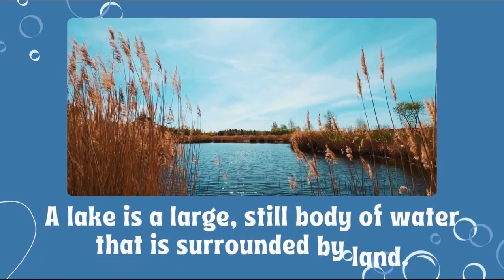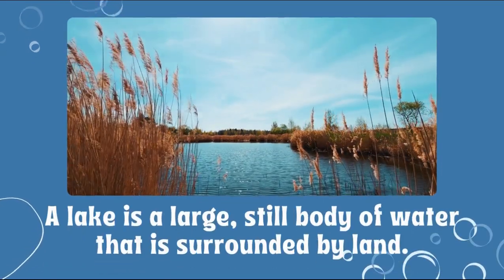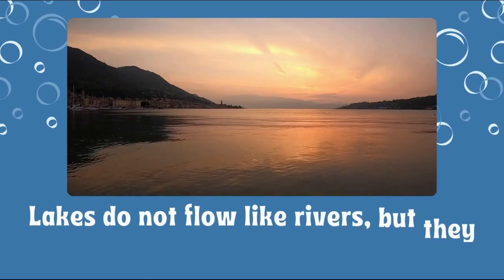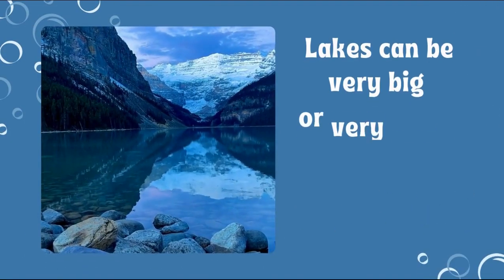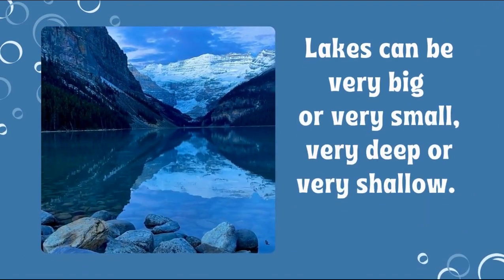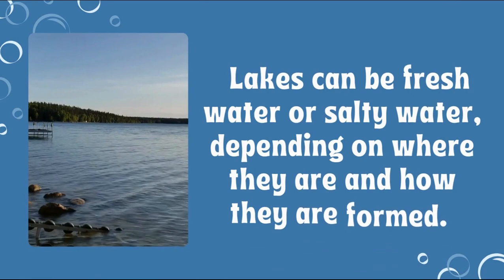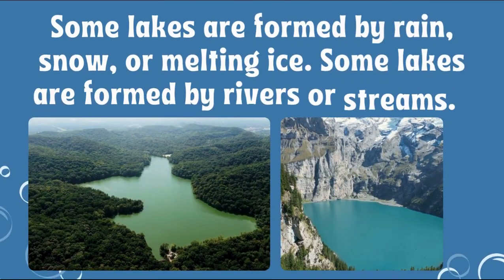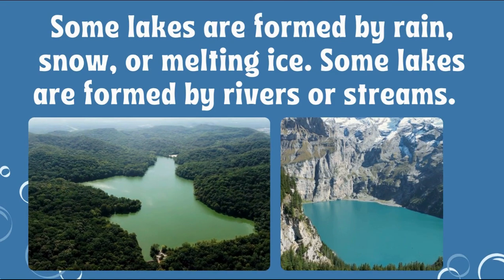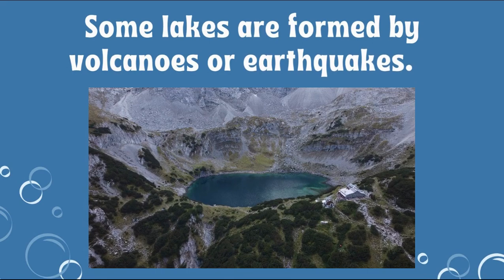Another type of water body is a lake. A lake is a large still body of water that is surrounded by land. Lakes do not flow like rivers, but they can have waves when the wind blows. Lakes can be very big or very small, very deep or very shallow. Lakes can be fresh water or salty water depending on where they are and how they are formed. Some lakes are formed by rain, snow, or melting ice. Some lakes are formed by rivers or streams, and some are formed by volcanoes or earthquakes.